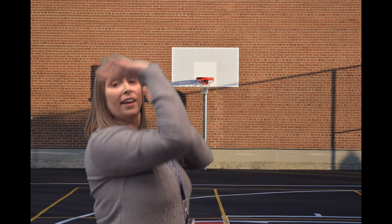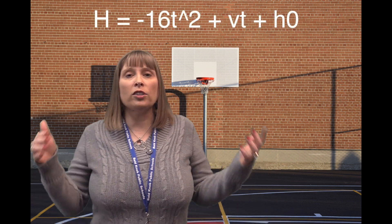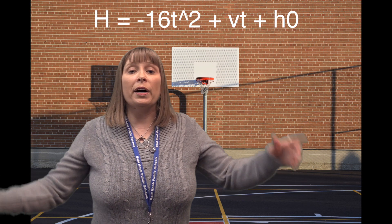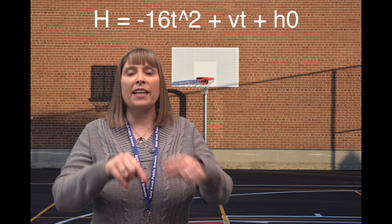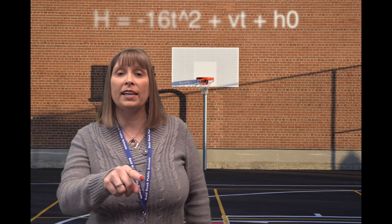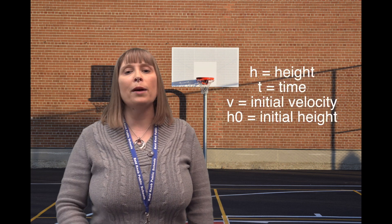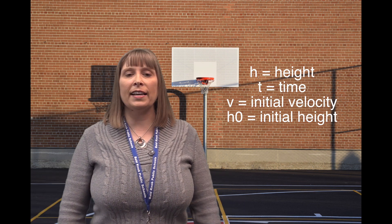Another way we can use polynomials is to model projectile motion. For example, shooting a basket in basketball. The projectile motion equation is based off the quadratic equation, but in this case it's h equals negative 16t squared plus vt plus h sub 0. Where h is the height, t is the time, v is the initial velocity, and h sub 0 is the initial height.